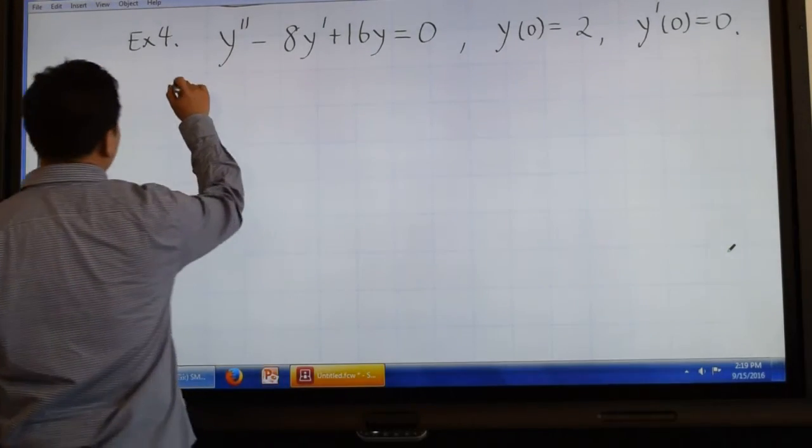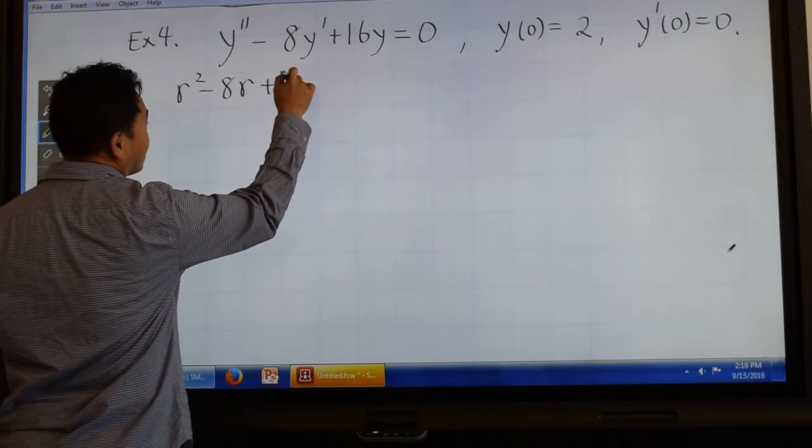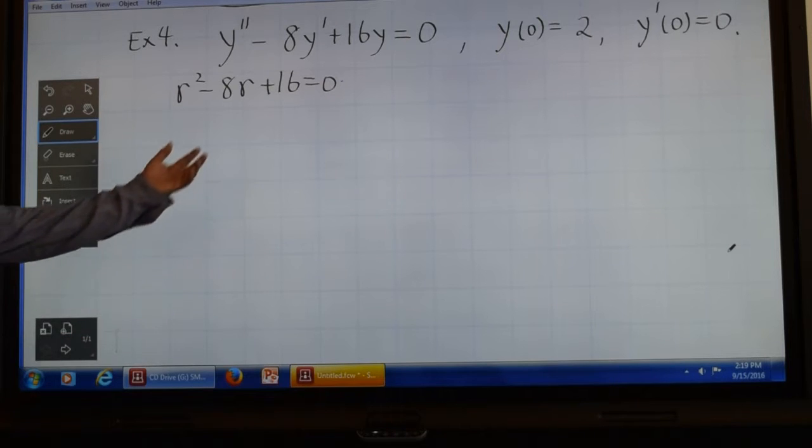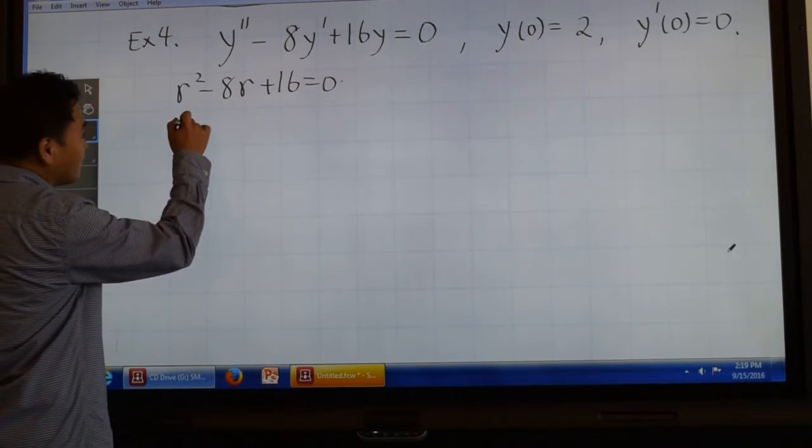All right, for this one you have r squared minus 8r plus 16 equal to 0. For this, actually 4 times 4 is 16 and 4 plus 4 is 8, so you can factor.